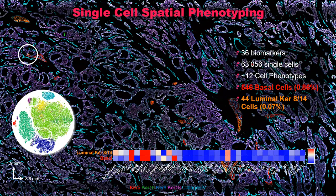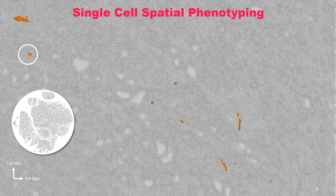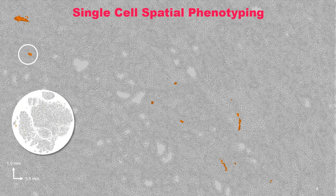It's single-cell spatial phenotyping — one way of looking at your tissue down to the single-cell level with a high biomarker panel, and even being able to identify the very rarest cells. This is an incredibly granular, incredibly detailed way of looking at your tissues. It's an application that can be done in any type of tissue for any type of biology, with very reliable, clean detection of different cell types.